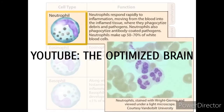Neutrophils respond rapidly to inflammation, moving from the blood into the inflamed tissue where they phagocytize debris and pathogens. Neutrophils also phagocytize antibody-coated pathogens. Neutrophils make up 50 to 70 percent of white blood cells.